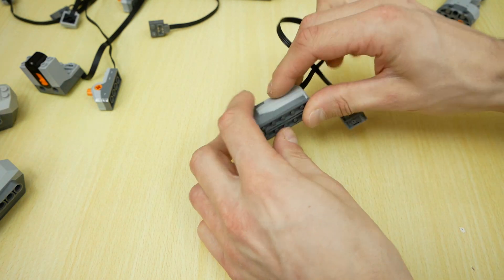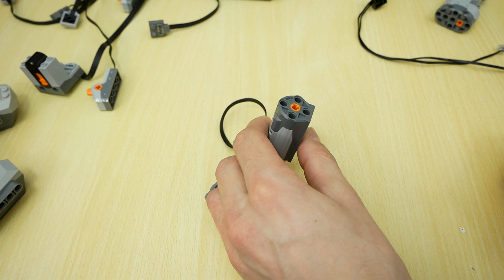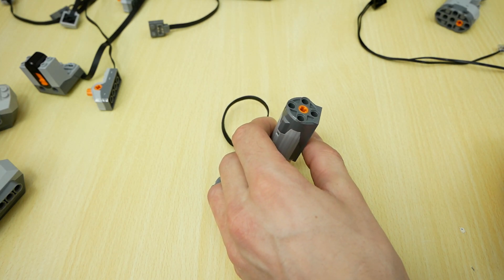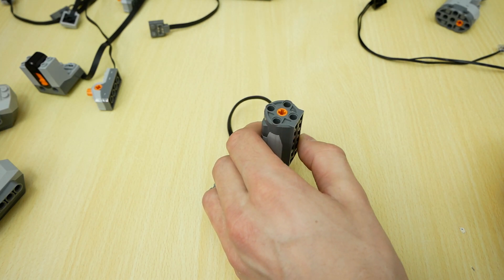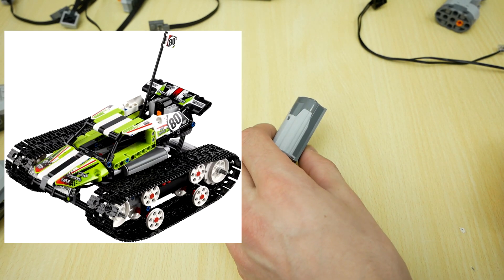Medium motor is the smallest in power functions system. This motor is very useful for additional functions. It was used for drive the model only in one set, small track off roader 42065.